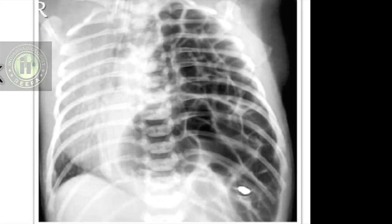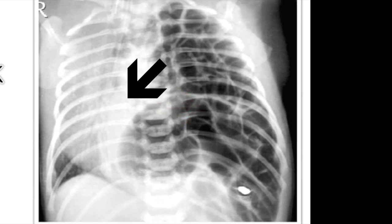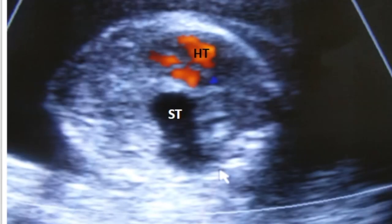Another newborn with severe respiratory distress — a very obvious case of Bochdalek-type congenital diaphragmatic hernia, showing many cyst-like shadows of bowel loops with a marked mediastinal shift. The baby is very distressed because of ipsilateral and contralateral hypoplastic lungs. The ipsilateral lung is collapsed by herniated bowel loops, and the contralateral lung is hypoplastic due to the marked mediastinal shift. We can antenatally diagnose Bochdalek-type hernia by identifying the herniated stomach in the thorax with marked mediastinal shift.